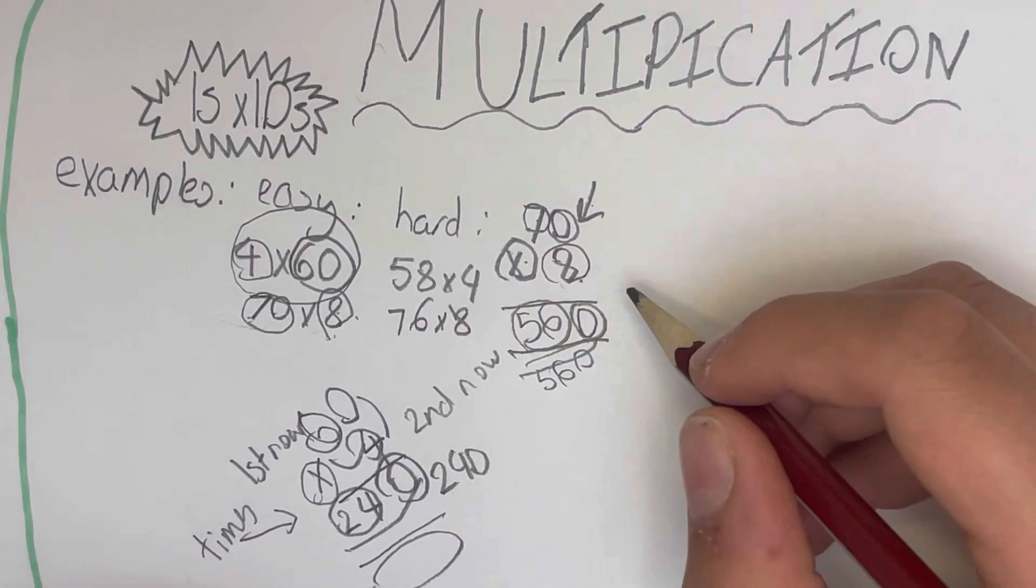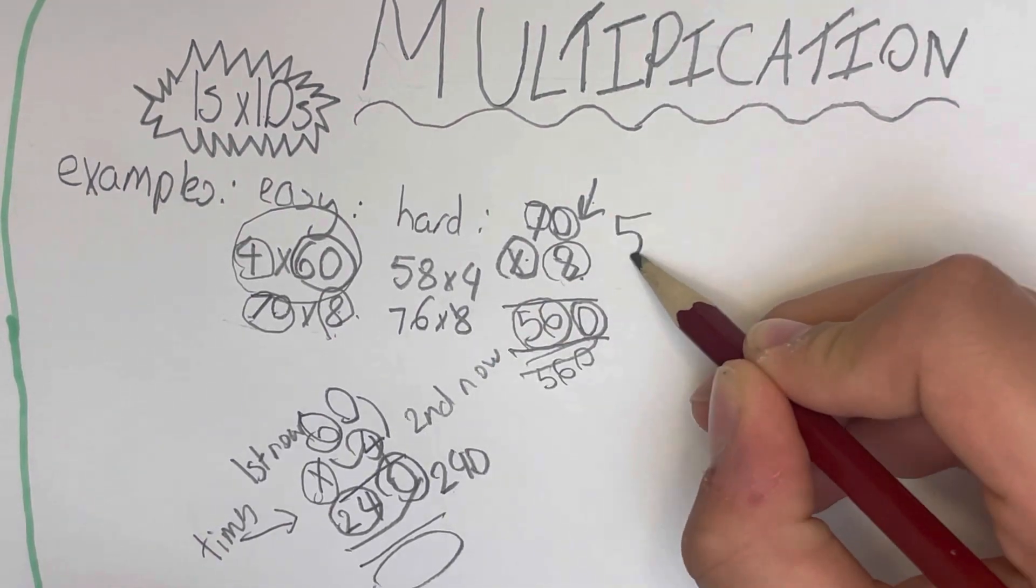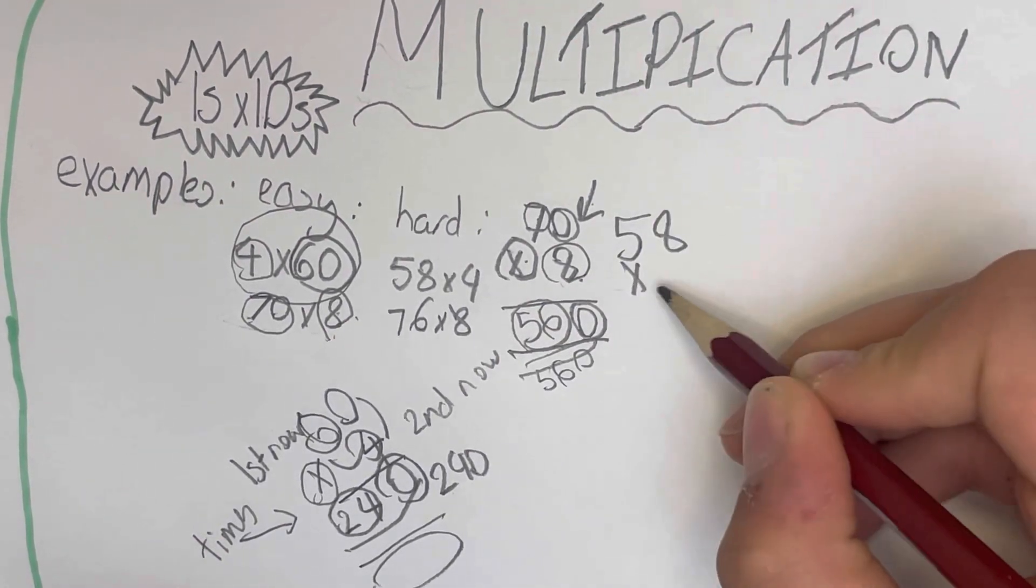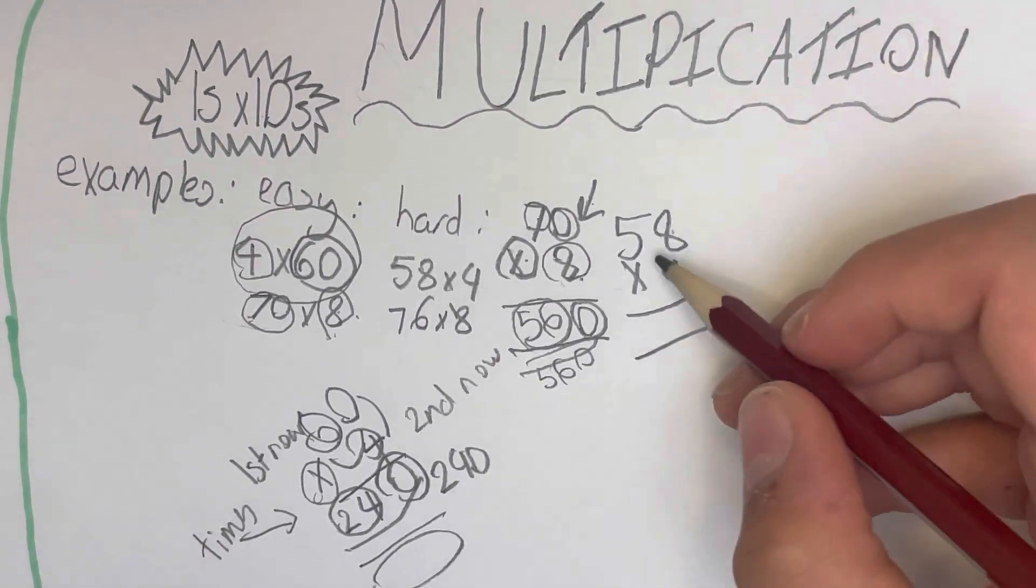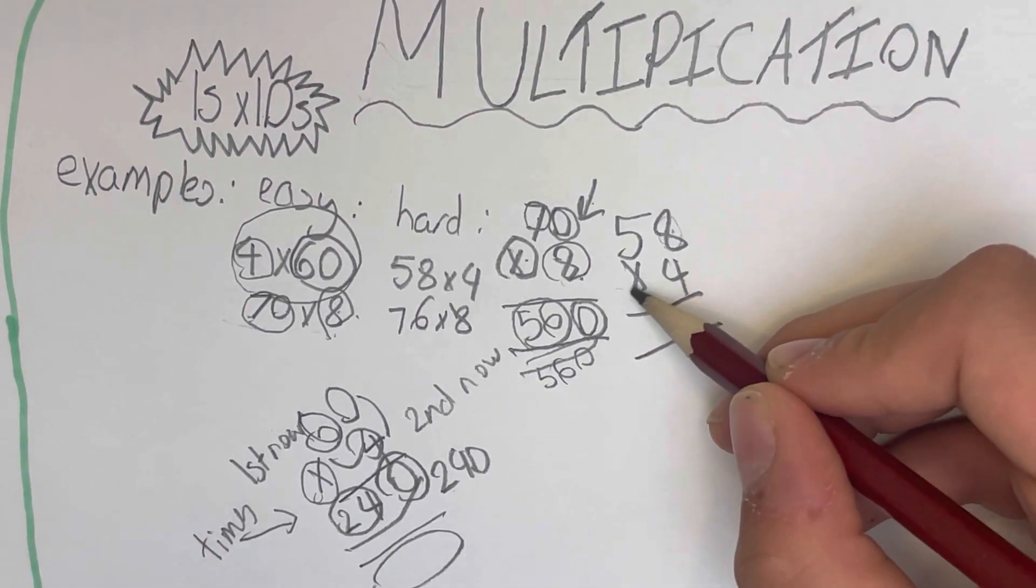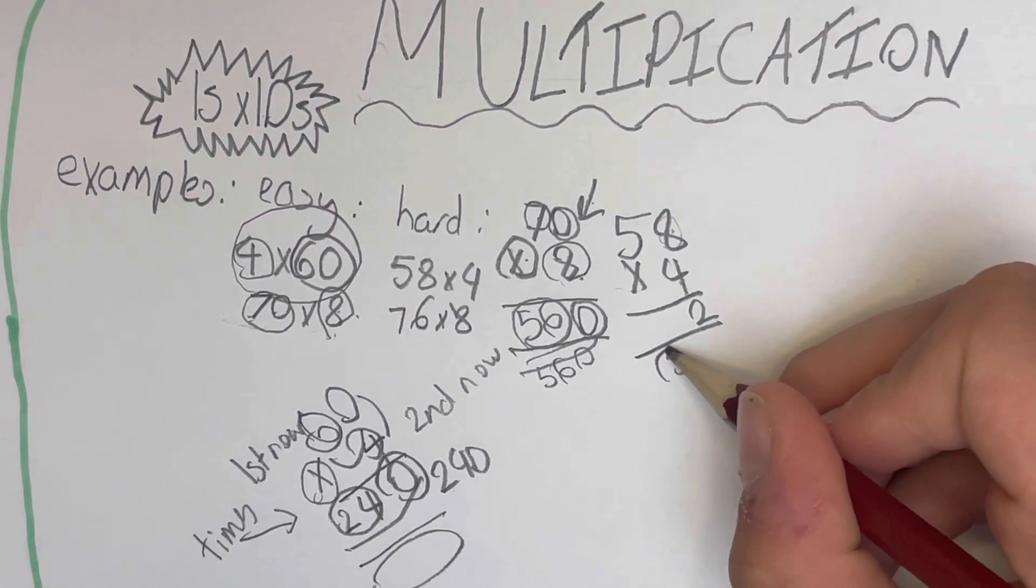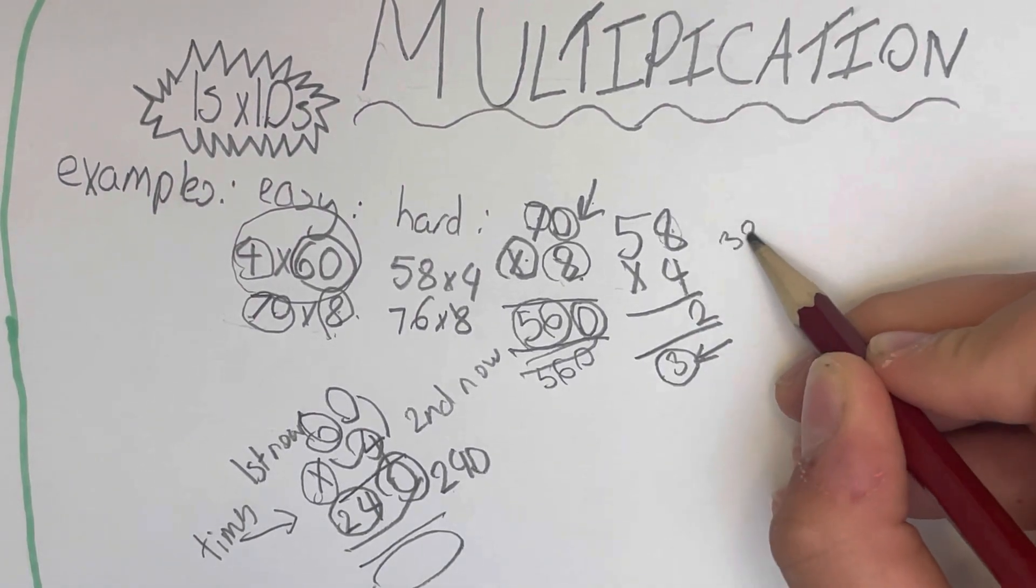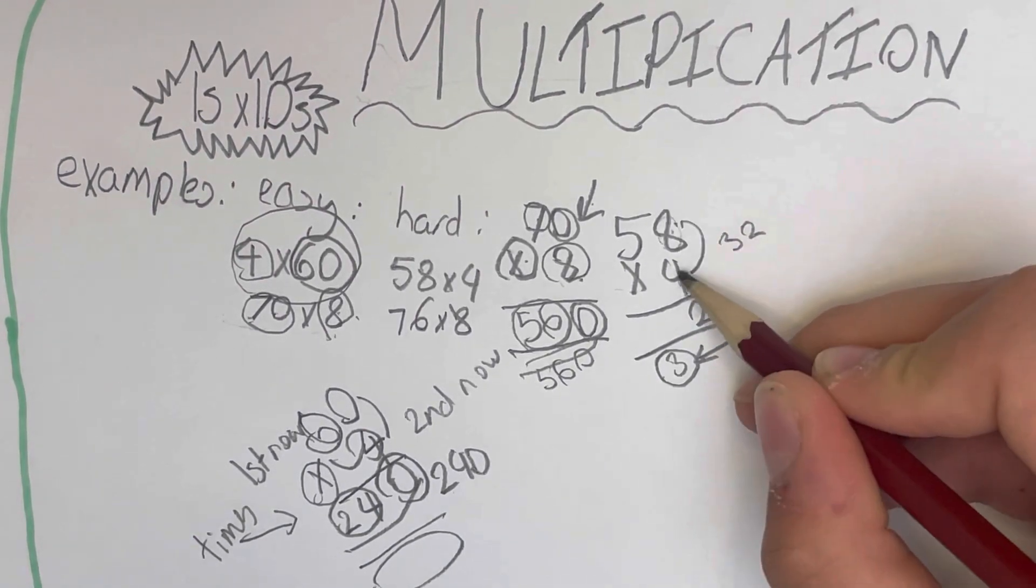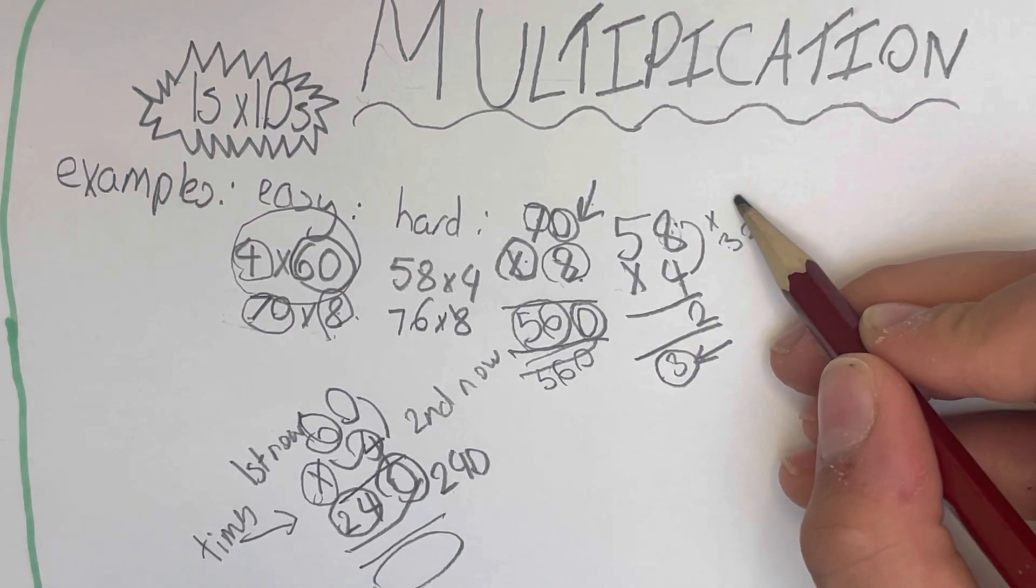So for the hard ones, we got 58 times 4. So first row, second row. So the first number times by 4, which is 32. And this is what I was talking about. Basically, we got the number 32 from timesing 8 and 4. We get 32.